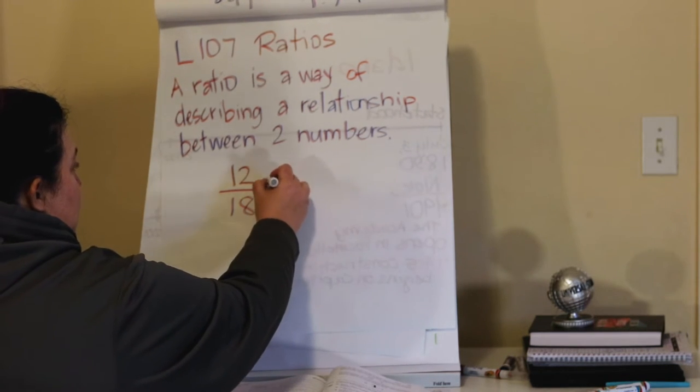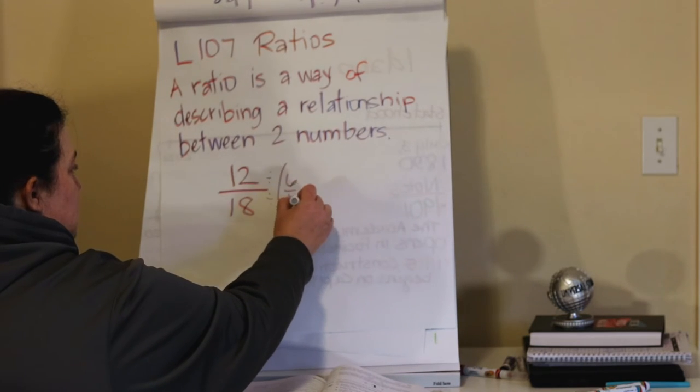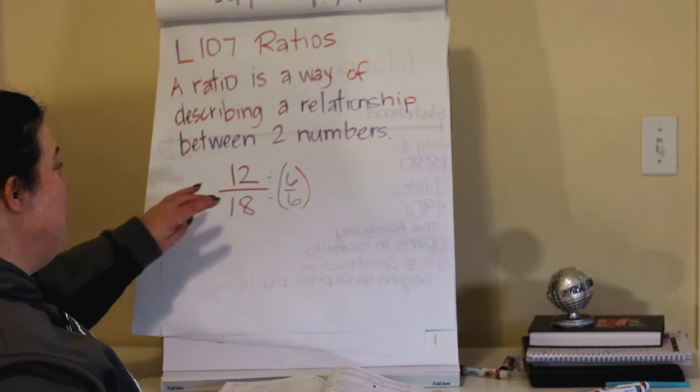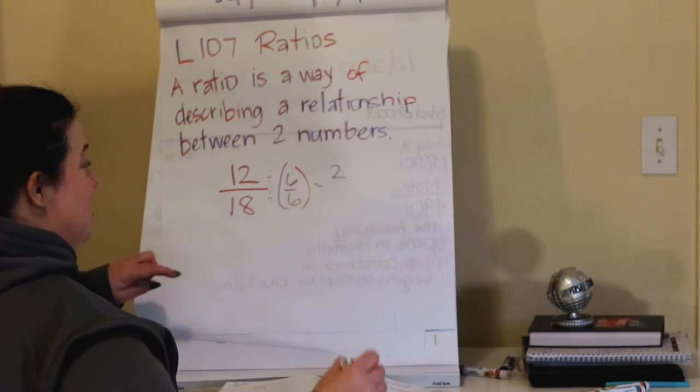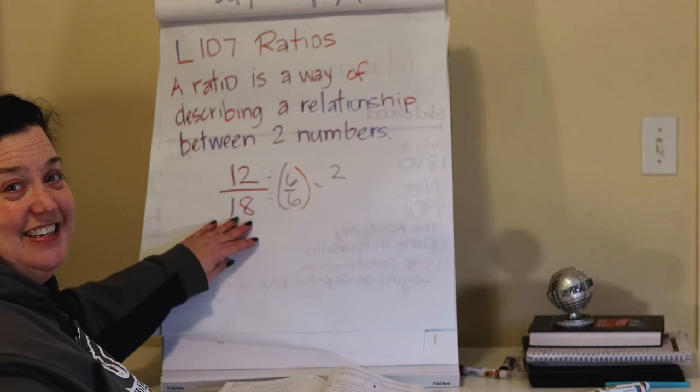So we're going to divide each part by 6. 12 divided by 6? 2. 18 divided by 6? 3.